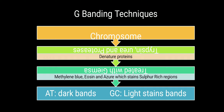Moving on to G banding technique — G stands for Giemsa. Here the chromosome is treated with trypsin, urea, and proteases, which denature the proteins binding to DNA. After denaturing the proteins, the chromosome is treated with Giemsa stain, which contains methylene blue, eosin, and azure, and stains sulfur-rich regions. Therefore, AT rich regions appear as dark bands and GC rich regions appear as lightly stained bands — same pattern as in Q banding.